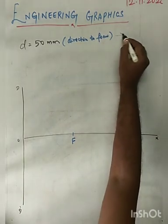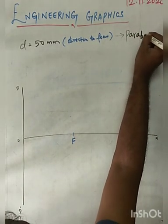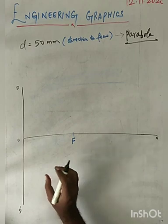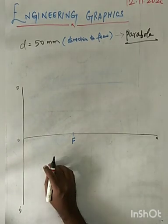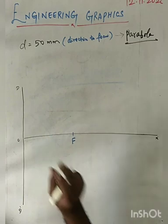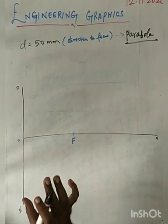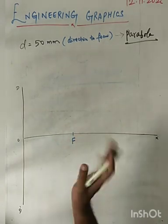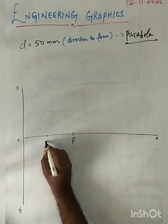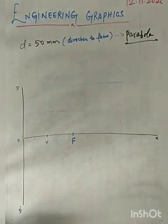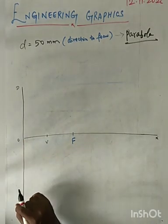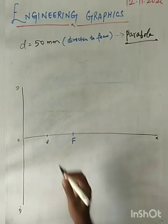For drawing a parabolic curve, the first step — not only for parabola, but for any curve — is to find the vertex point. The eccentricity value E equals 1 for a parabola; it doesn't need to be mentioned in the question, but it is understood. Because E=1, the vertex will be at the midpoint of OF. The values of OV and VF remain the same. So this is the vertex point.